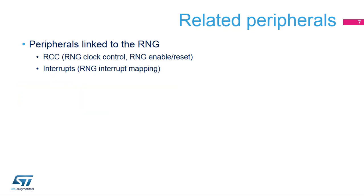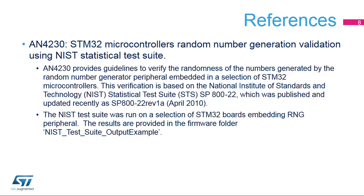This is a list of peripherals related to the random number generator. Please refer to these trainings for more information if needed. For more details, please refer to Application Note AN4230 about using the NIST Statistical Test Suite to validate the random numbers generated by a selection of STM32 MCUs.